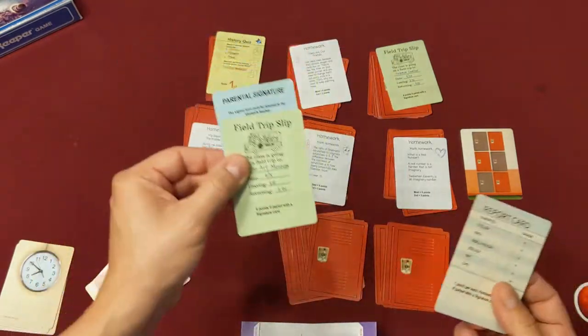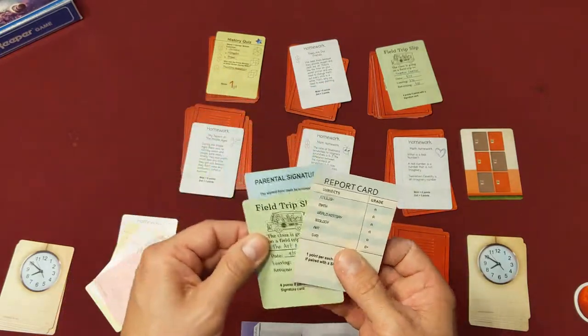So of course, if I have a lot of homework cards, more than four, then I'm probably going to pair it with my report card. If I don't, then I'll pair it here. If you have multiple parental signatures, then you can of course pair one over here and one over here.